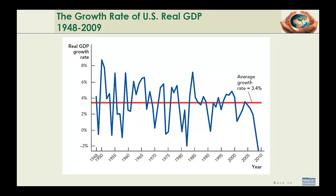Here's a graph that looks at the growth rate of U.S. real GDP over roughly a 60-year period. The red line gives us the average growth rate over this period. On average, GDP grew about 3.4%. In some years, GDP grew above that trend line — back in 1950 it grew over 8%, and in the mid-80s it grew about 7%. But sometimes the growth rate is less than the trend, and sometimes we even see that it is negative. During the most recent recession, we had negative growth, which means the economy actually contracted.